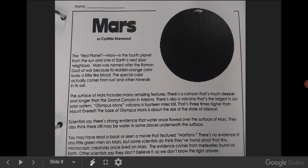Scientists say there's strong evidence that water once flowed over the surface of Mars. They also think there still may be water on some planets underneath the surface.